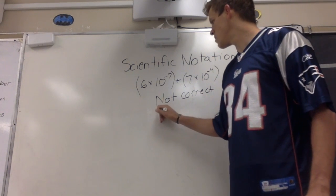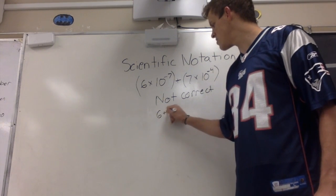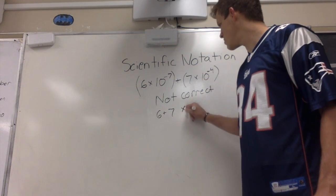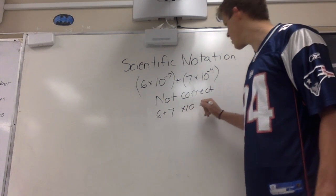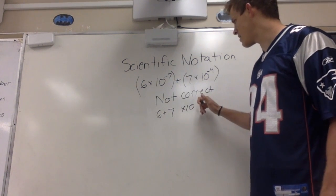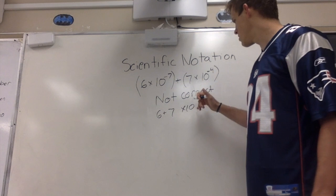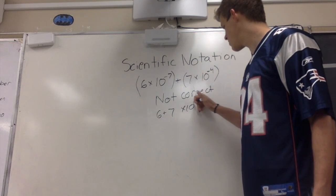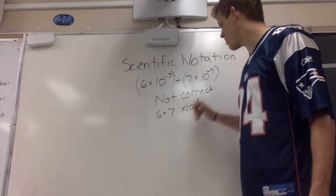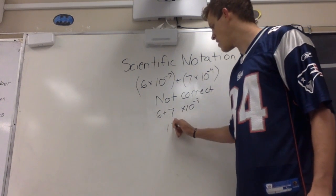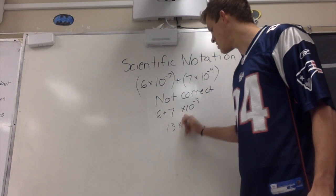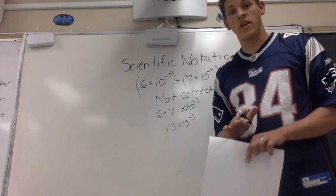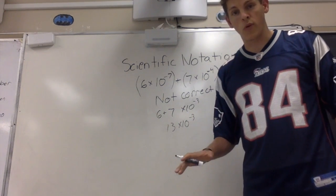This is not correct. Some people might put six plus seven times 10 to the, and then maybe they would subtract these, leaving us with negative three. So that is not what we're doing.